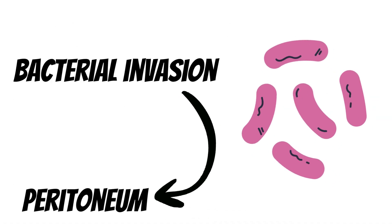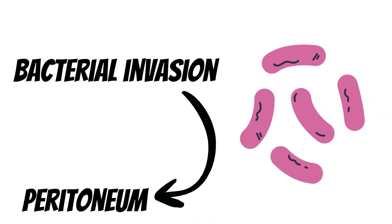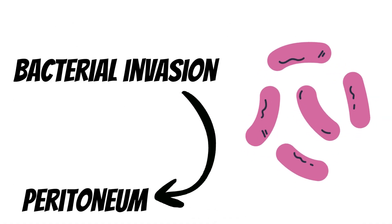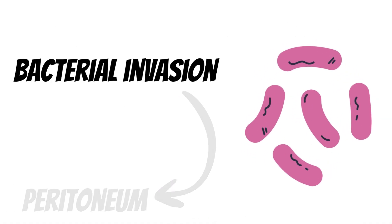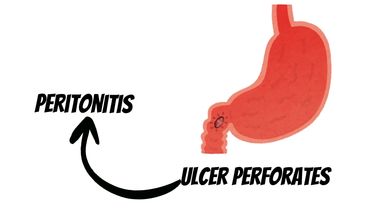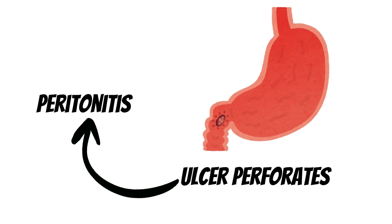Peritonitis can occur when there is bacterial invasion into the peritoneal cavity. One common route is when an ulcer in the duodenum or stomach perforates, leading to spillage of the contents present inside the bowel, causing secondary infection of the peritoneal cavity and peritonitis.